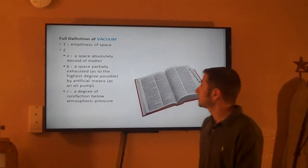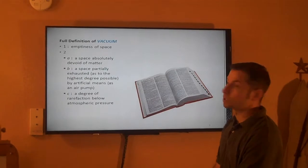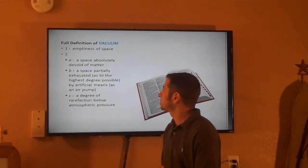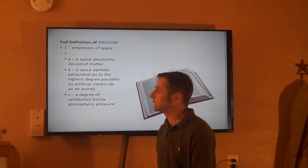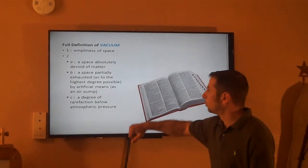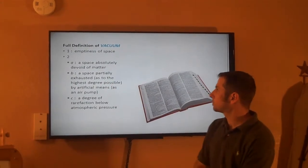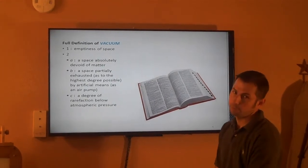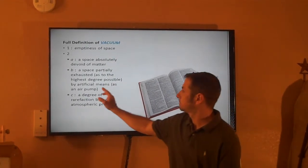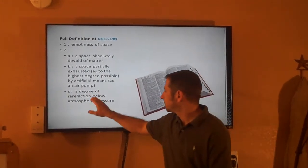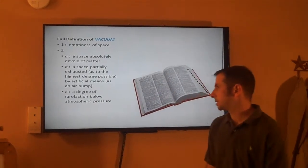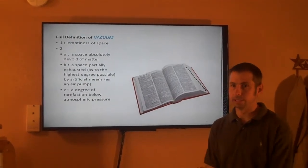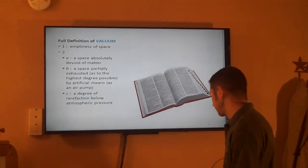The dictionary defines vacuum as, one, the emptiness of space. I'm just going to paraphrase that and say, why don't we just say outer space? And two ways, kind of the same thing. A space absolutely devoid of matter. Again, outer space, I think that's saying the same thing. And what we're talking about today is 2B. And 2B says, a space partially exhausted, as to the highest degree possible, by artificial means, as a vacuum pump. And then it says down here, a degree of rarefaction below atmospheric pressure. And I think that's saying anything at a lesser pressure than what you and I are currently breathing right now. So anything that's slightly vacuumed or below atmospheric pressure is considered a vacuum.